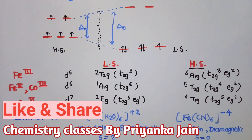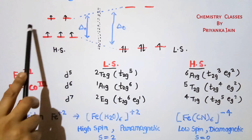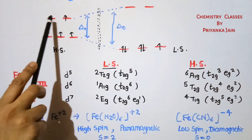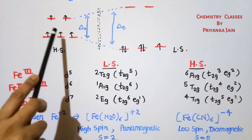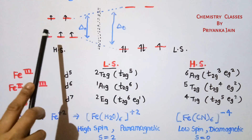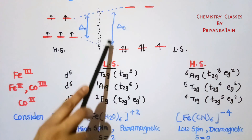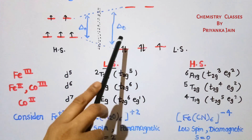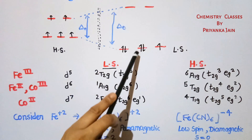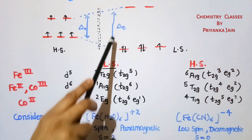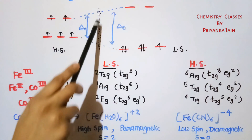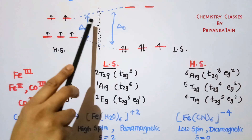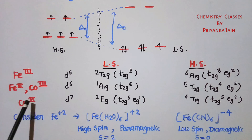A diagram helps illustrate this: in the high spin state Δo is small, so all spins are unpaired and electrons jump into the eg level. When the gap between the two levels increases, electrons pair up in the lower t2g level giving a low spin complex. At the point where the energy gap between the pairing energy and Δo is very small, a transition occurs — this is the spin crossover region.